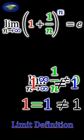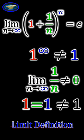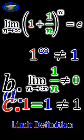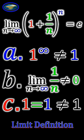one multiplied by itself an infinite number of times is not one. Please comment your answer as A, B, or C and follow this series.